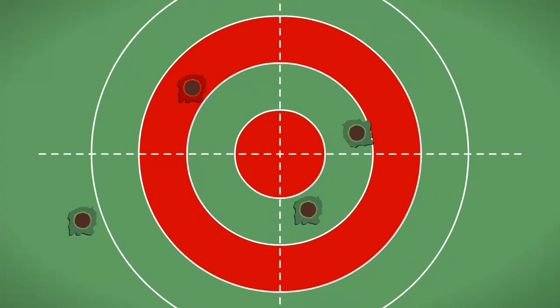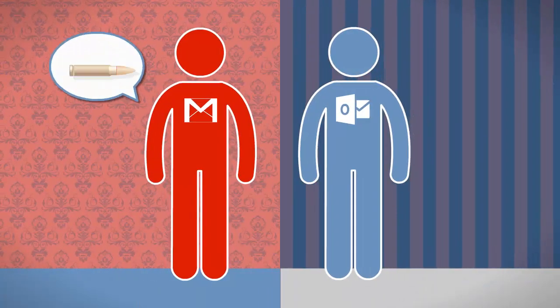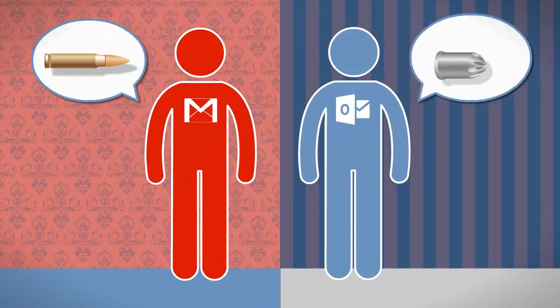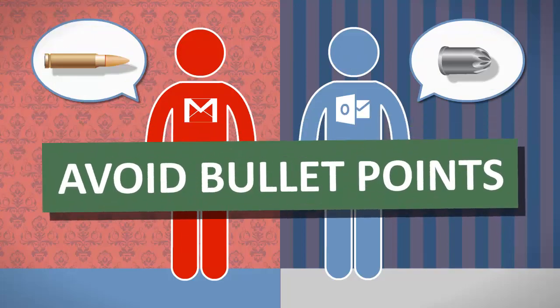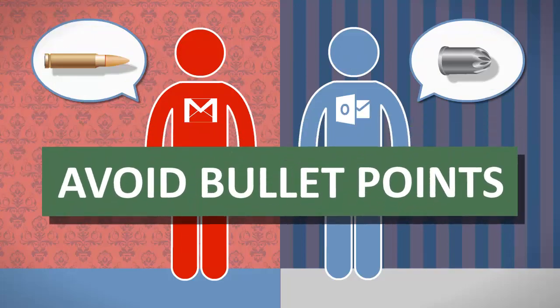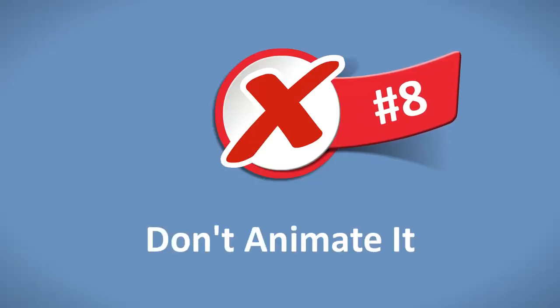Number seven: don't use bullet points. Bullet points tend to render strangely from client to client — what Gmail thinks of as a bullet point differs from Outlook's definition. To keep them all happy, just avoid bullet points altogether. If need be, use different rows in your table to get that list look.